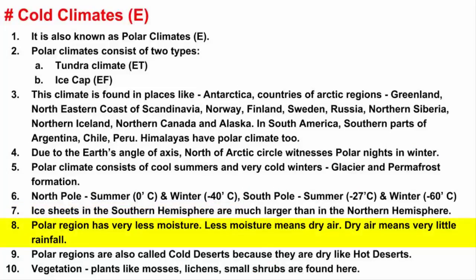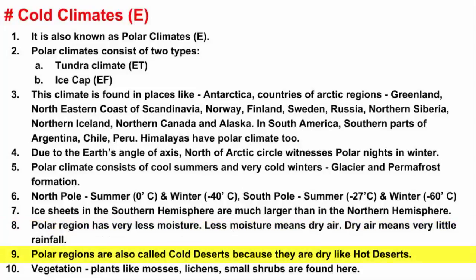Since the air in polar regions is so cold, it contains very little moisture. This is because for half the year, the sun does not rise above the horizon. Since there is very little moisture, the air is dry, and dry air means very little snowfall. Polar climates can be as dry as the hot desert, which is why these regions are also called cold deserts.